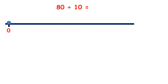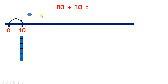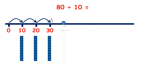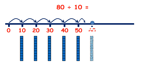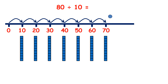Now let's look at 80 divided by 10. If I ask you how many 10s are in 80, you know that we need 8 tens to make the number 80, so our answer is going to be 8. And if we count in 10s until we get to 80 — 10, 20, 30, 40, 50, 60, 70, 80 — we've made 8 jumps, so 80 divided by 10 is 8.